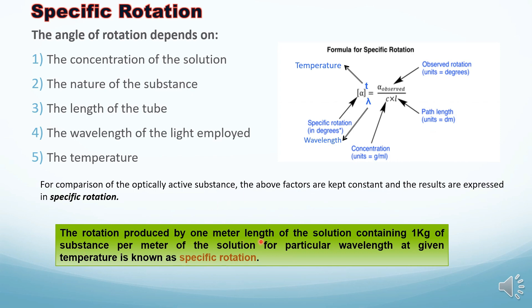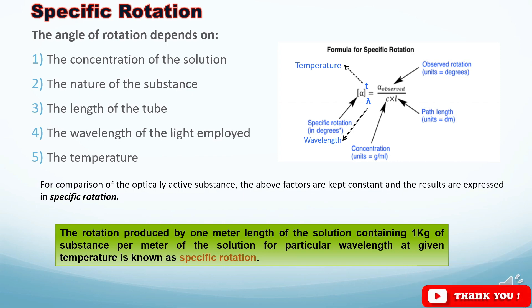Specific rotation is the rotation produced by one meter length of solution containing one kg of the substance per meter of the solution at a particular wavelength and given temperature. In practice, you take grams of the substance and the length of the solution in decimeters. Keep in mind that the definition uses these standard units for memorization purposes.